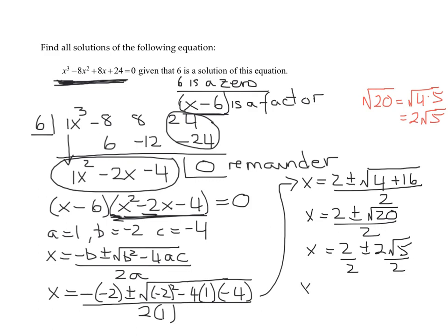So, what are my other solutions? 2 divided by 2 is 1 plus or minus. Remember, these reduce. So, I get 1 plus or minus the square root of 5.